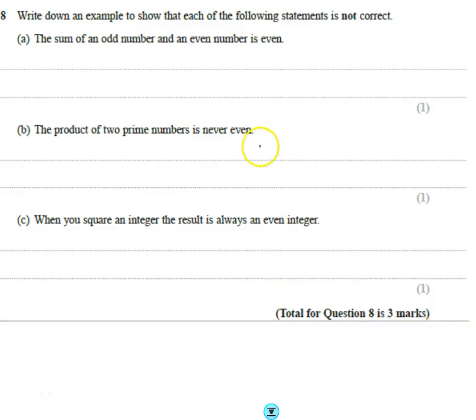Okay, so write an example to show each of the following statements is not correct. So the sum of an odd number and an even number is even. We want to show this is not correct.